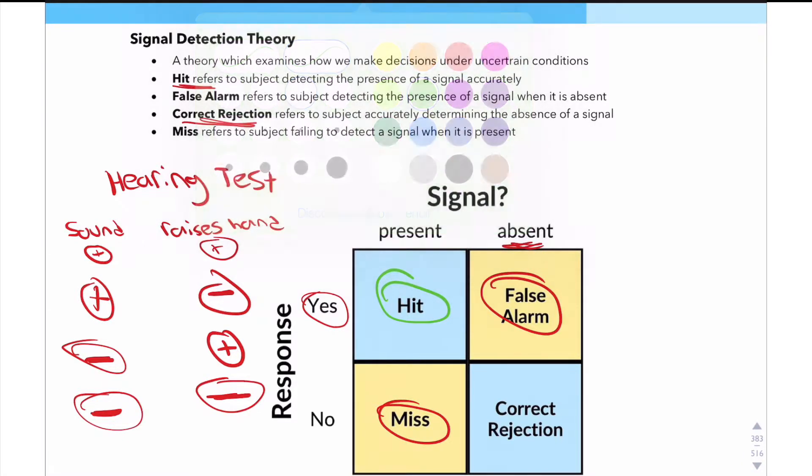So this is kind of similar to false positives and false negatives, if you're familiar with those concepts, but you need to know the specific terminology for signal detection theory. And this is how you will be tested on the MCAT. They're going to give you some situation like this, and you're going to need to know what is the right terminology.